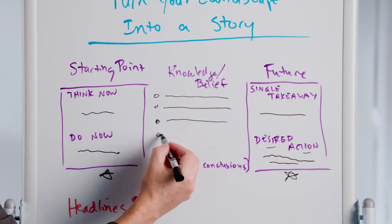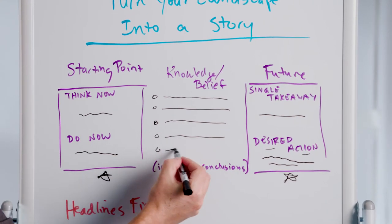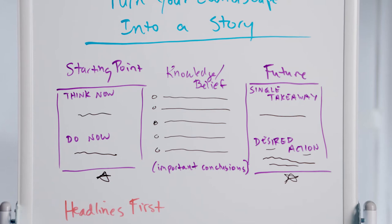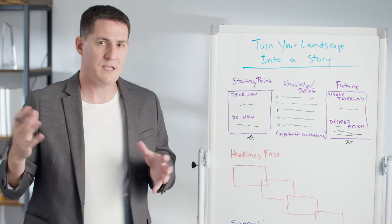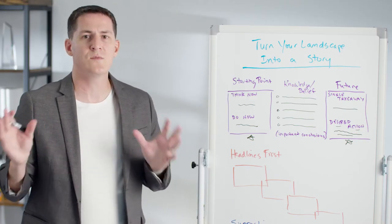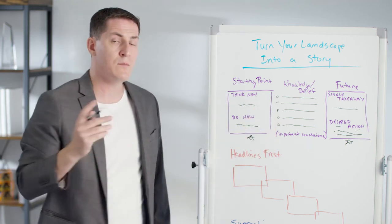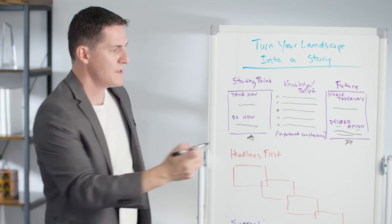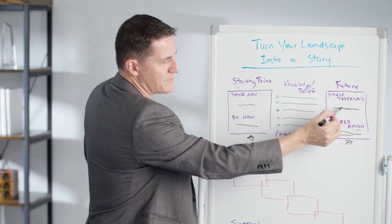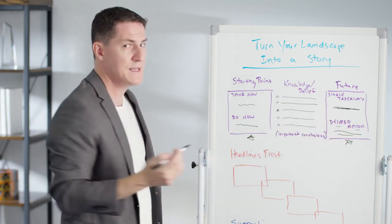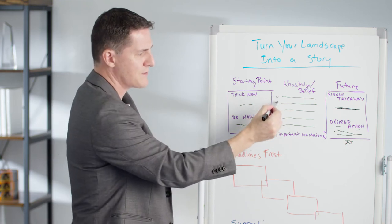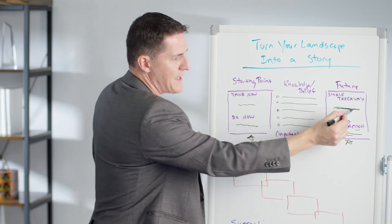So what you're going to write in between are basically your most important key conclusions. There might be a handful of these. So even if your landscape analysis might eventually be longer, it could be 10, 20, 30, 40, 50, 100 slides, whatever length you need it to be, you're still going to have just a handful of the most important conclusions. If you want someone to leave with this single takeaway, you may need them to believe a few things first in order for them to have that takeaway.